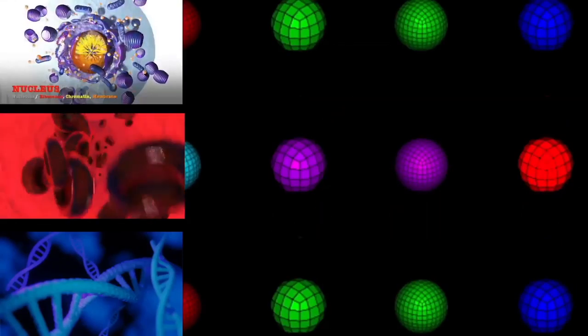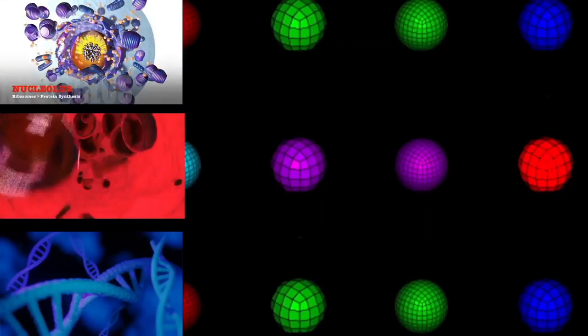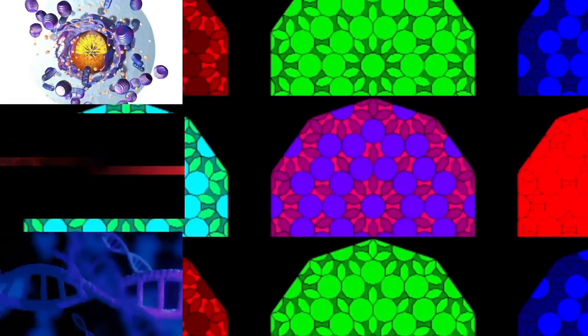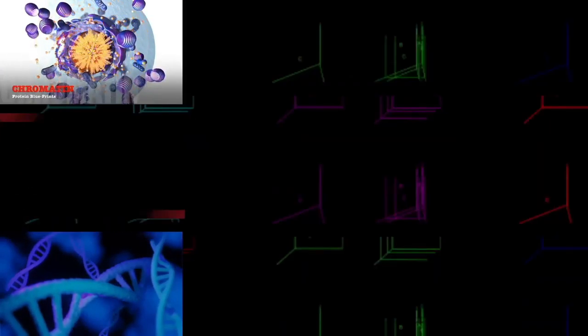The process of mitosis is divided into stages corresponding to the completion of one set of activities and the start of the next. These stages are prophase, prometaphase, metaphase, anaphase, and telophase.